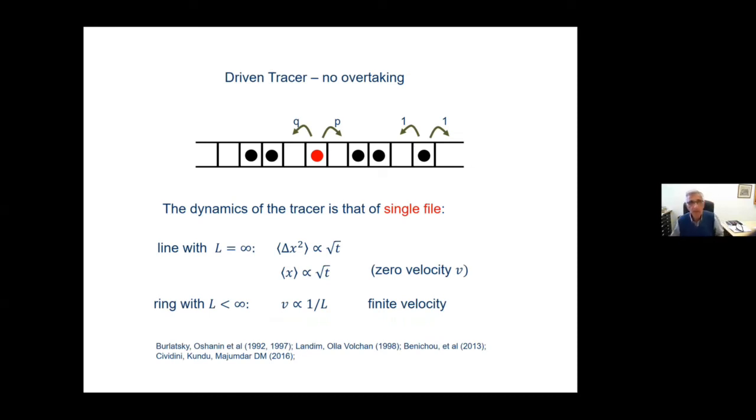The next step is to look at a driven particle. So this special particle, the red one here, while the rest of the particles are just diffusive, moving back right and left with the same rate, this particle is biased to move, say, more to the right with the weight p, than to the left with the weight q. And particles here still cannot cross each other. And then it turns out that it has similar features to that of single file. Namely, that if you look at delta x squared, the fluctuation of this tagged particle or this tracer, it goes like square root of t.